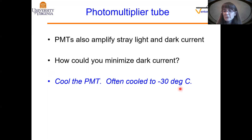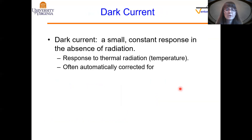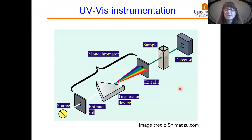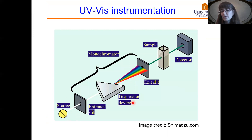As a summary, today we covered all the parts of a UV-vis instrument: the light source, the sample holder, and the detector. For more information on monochromators, you can look at the video on atomic absorption. Thank you.